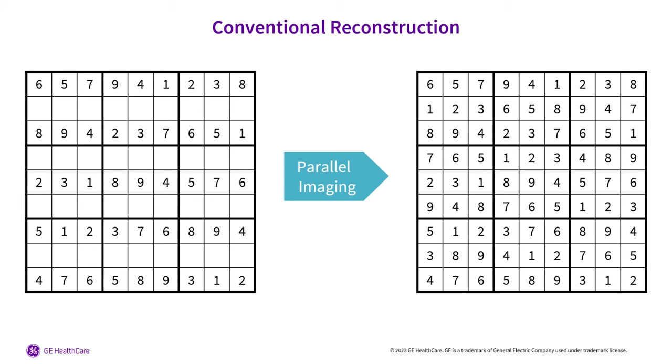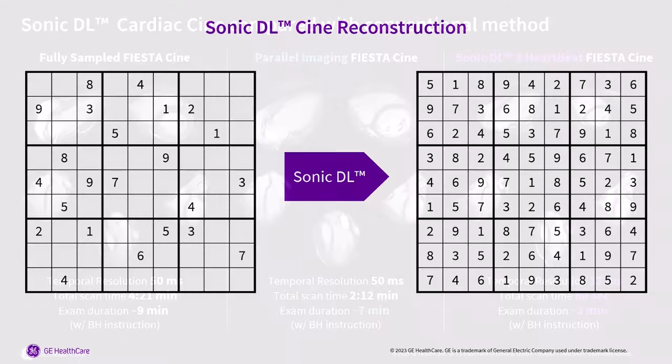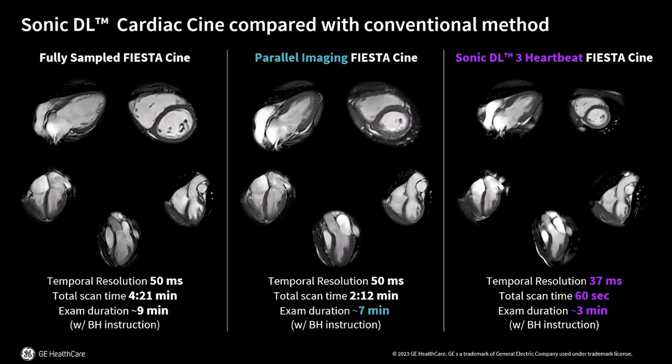Going back to the Sudoku analogy, this would be like moving from an easy puzzle to a hard one, where you start with significantly less data but can still arrive at the correct solution. By combining the above techniques, we can achieve extremely high acceleration factors of up to 12 times, while still delivering high fidelity cine images.